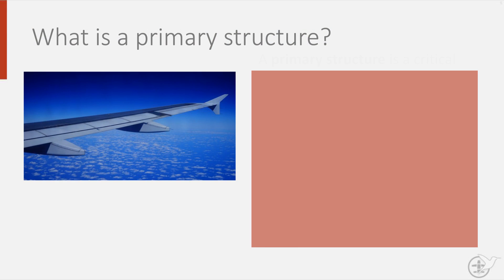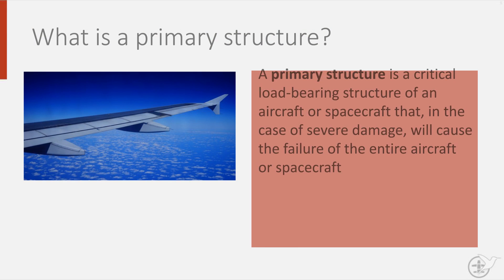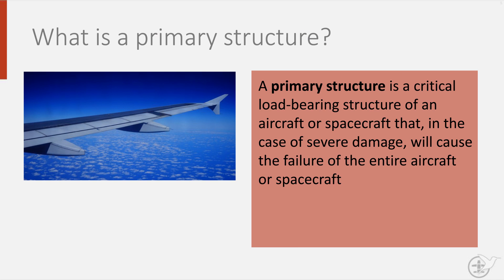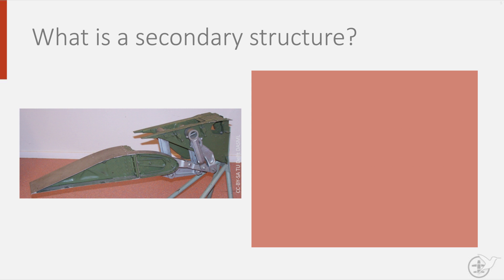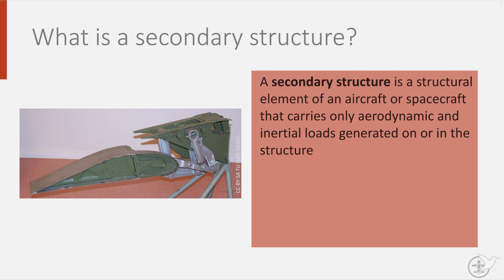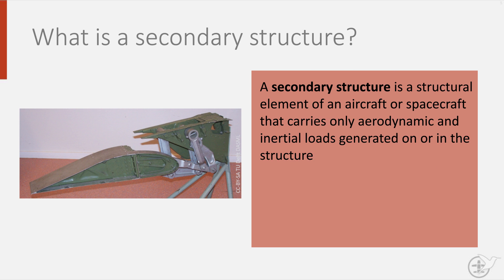When we look at the airframe, we can divide it into a primary and a secondary structure. The primary structure is formed by those parts that, in case of severe damage, will cause the entire aircraft to fail. Think here of the fuselage, the wing, or the empennage — that is the tail of the aircraft consisting of a horizontal and vertical tailplane. Secondary structures are elements that carry only aerodynamic or inertia loads generated on or in the secondary structure. Here you can think of the control surfaces of an aircraft.